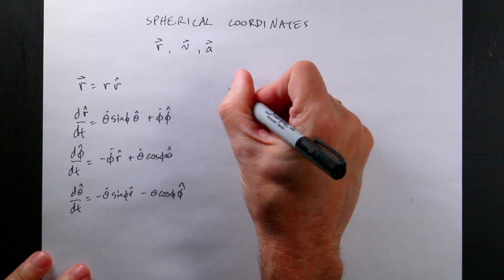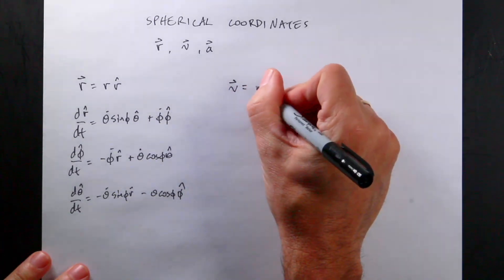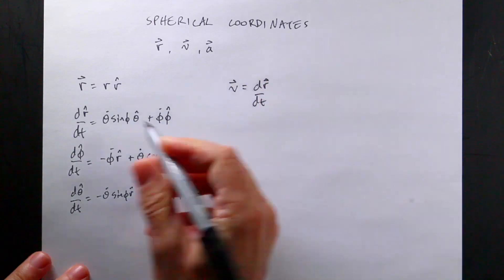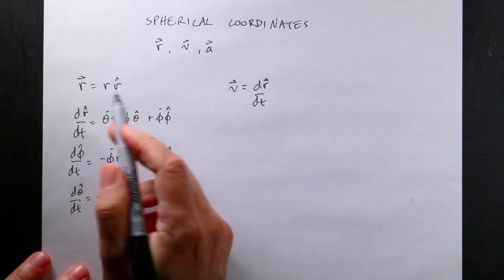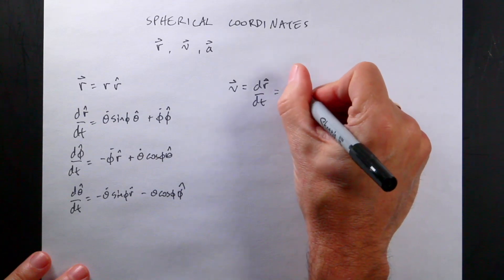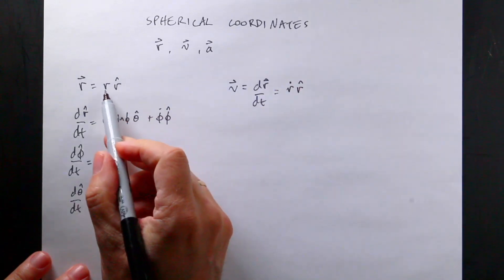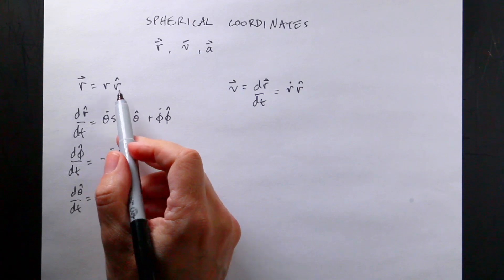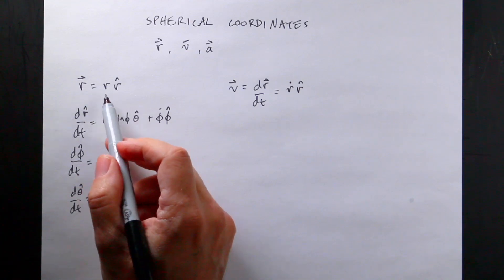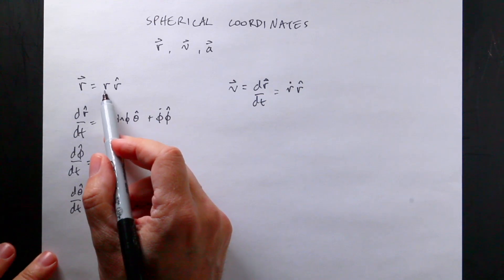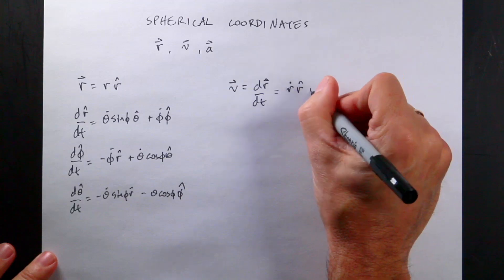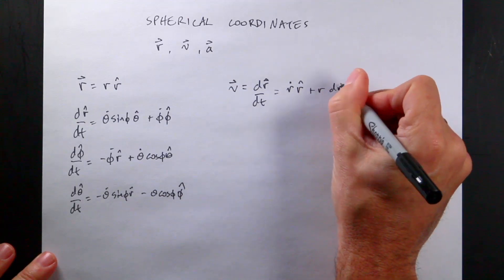Now if I want to find the velocity, velocity is just defined as dr/dt. So I just need to take the derivative of r. The derivative of r gives r-dot times r-hat, but it's a product rule — as the particle moves, r-hat changes direction too. So I take the derivative of r times r-hat, which gives r-dot times r-hat plus r times dr-hat/dt.